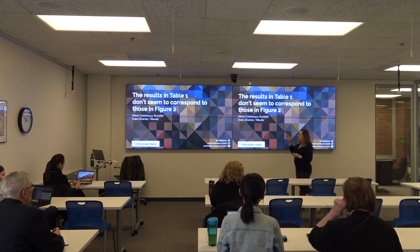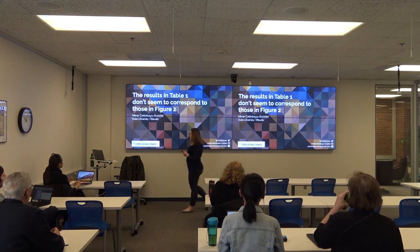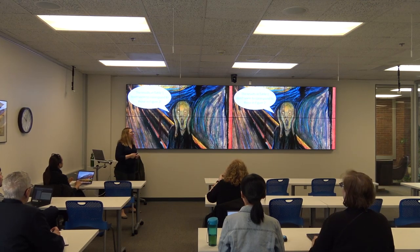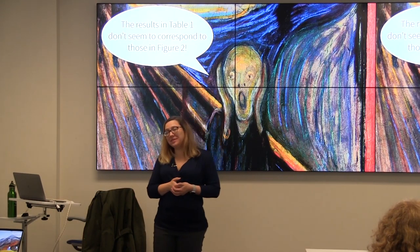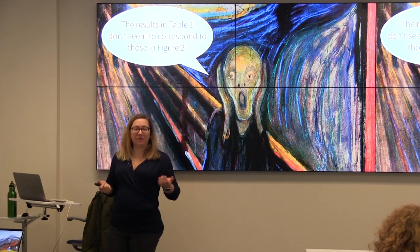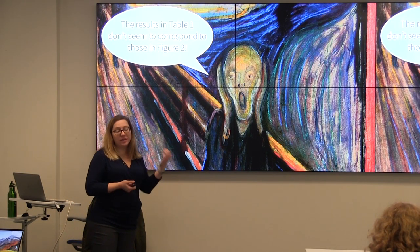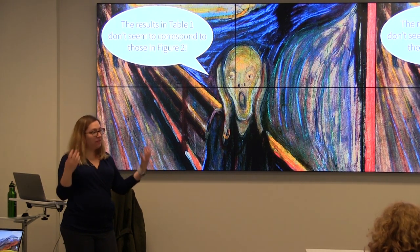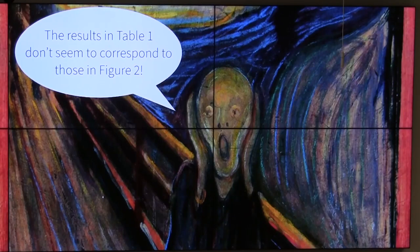I don't know if you can make out what this pixelated picture is in the background, but I chose this original title slide because this is how I feel when the results in table one don't seem to correspond to those in figure two — and it happens. If you don't have the right workflow, this is a very easy situation to find yourself in, or somebody gives you supposedly their data that they used to build their analysis and their paper, and there's simply no way of getting to the answer.